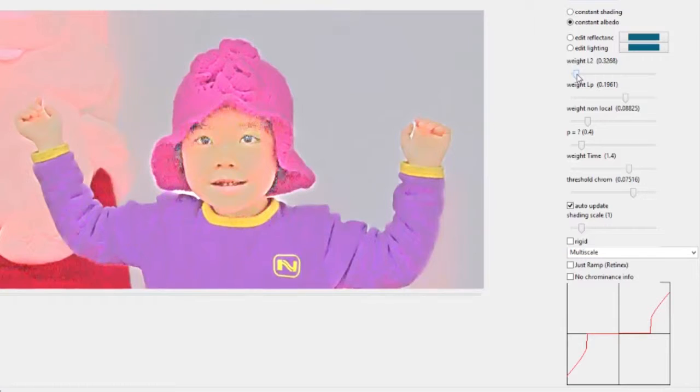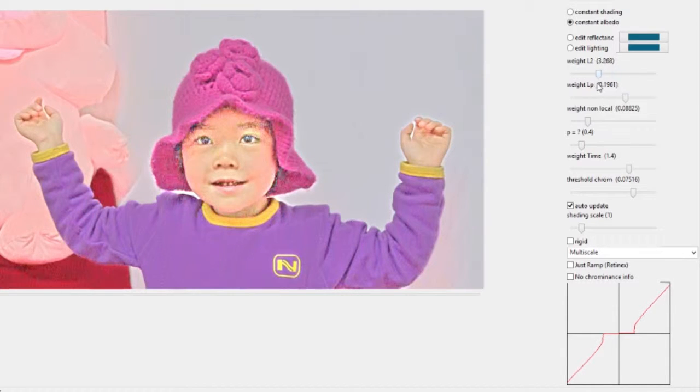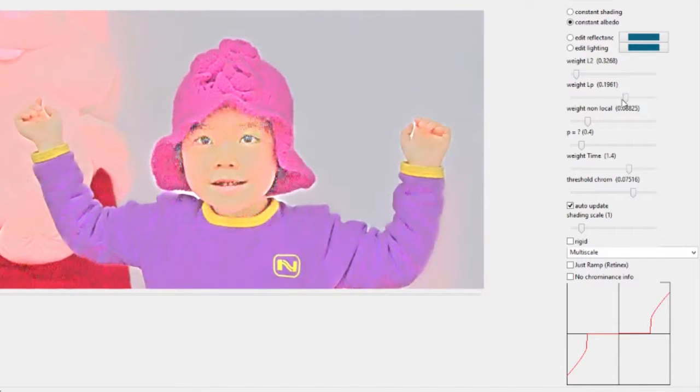Changing the contribution of the reflectance prior effectively changes the similarity to the chrominance. Changes to parameters are visualized very quickly. We also include non-local terms which propagate constraints to spatially distant but similar pixels.